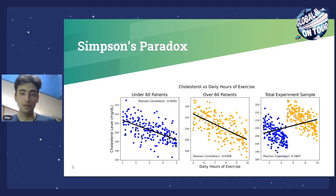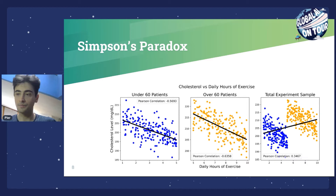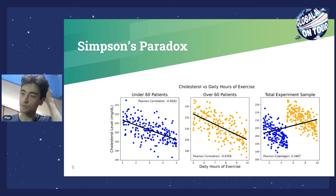However, when we combine both groups and examine the whole population, we get a completely opposite, positive correlation — suggesting more exercise leads to increased cholesterol. This is Simpson's Paradox: correlations point in one direction within subgroups but reverse when considered as part of the whole. To uncover the reason, we need to go beyond the provided data and think about how the data was generated — for example, what unknown or missing variable prevents us from seeing the full picture.